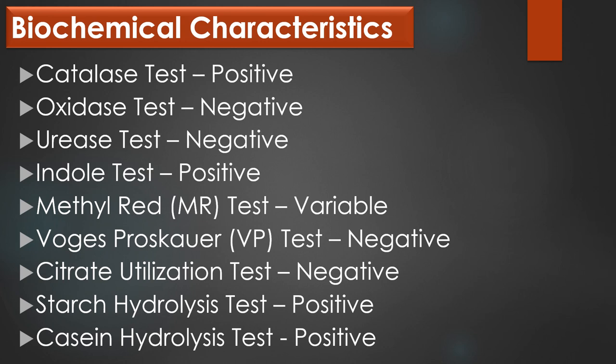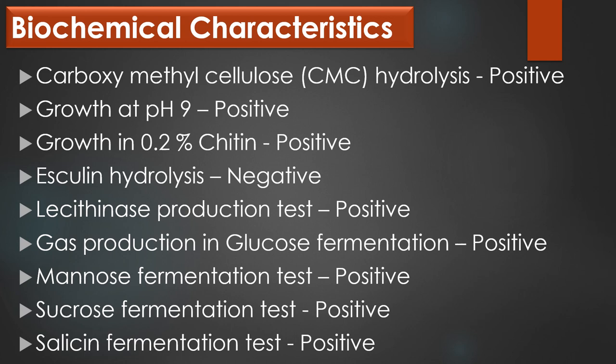Biochemical characteristics of Bacillus thuringiensis: Catalase test positive; Oxidase test negative; Urease test negative; Indole test positive; Methyl red test variable; Voges-Proskauer test negative; Citrate utilization test negative; Starch hydrolysis test positive; Casein hydrolysis test positive; CMC hydrolysis positive; Growth at pH 9 positive; Growth in 0.2% chitin positive; Esculin hydrolysis negative; Lecithinase production test positive; Gas production in glucose fermentation positive; Mannose fermentation positive; Sucrose fermentation positive; Salicin fermentation positive.